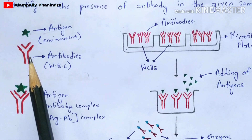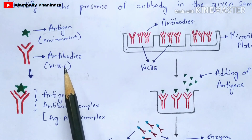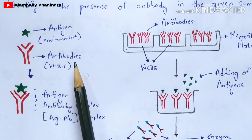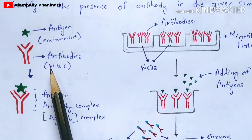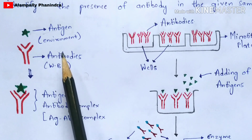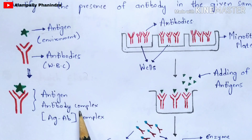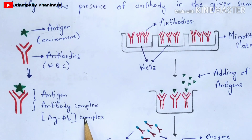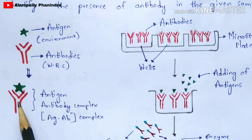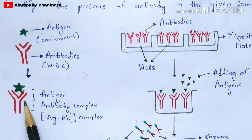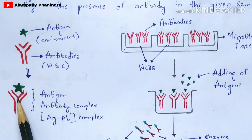Once the antigen enters our body, our blood's WBC — white blood cells — get activated and start releasing antibodies against the antigen. Once these antibodies are released, they start interacting with the antigen and form the antigen-antibody complex, also called the AG-AB complex.